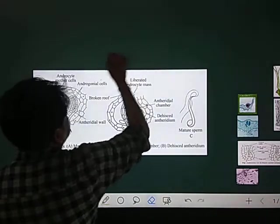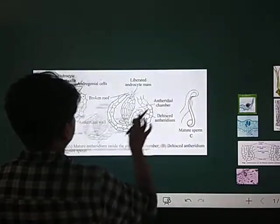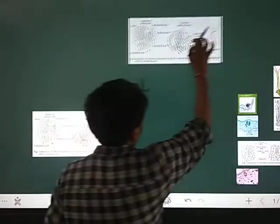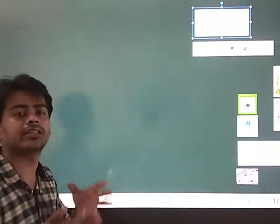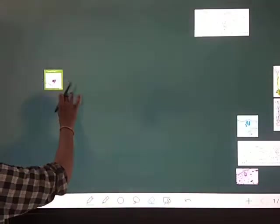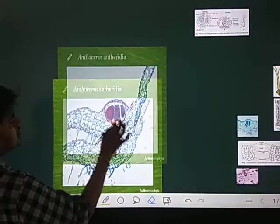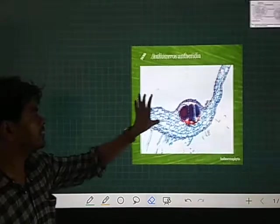Next is the female reproductive part. As you all know, the female reproductive part is known as archegonia. Before discussing archegonia, let's see antheridia in real photographs, which will be very useful to you.